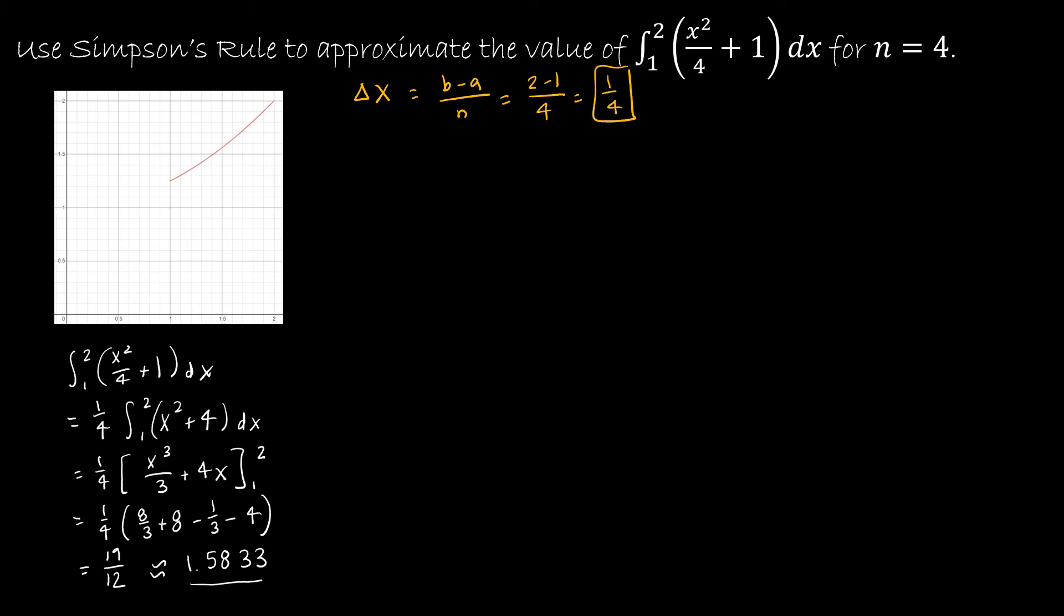As I'm finding my area approximation, I'm going to take b minus a or 2 minus 1 over 3n. Then inside, I'm going to have f of my first value, which is 1. But then I'm just going to increase by 1 fourth: 4 times f of 5 fourths plus 2 times f of 3 halves plus 4 times f of 7 fourths and then f of 2.